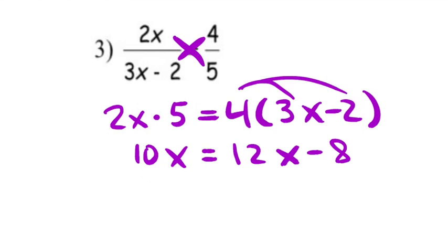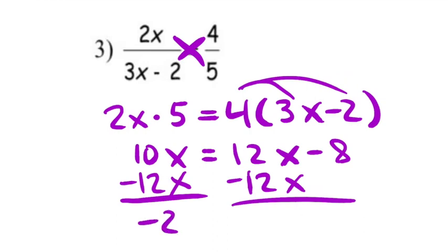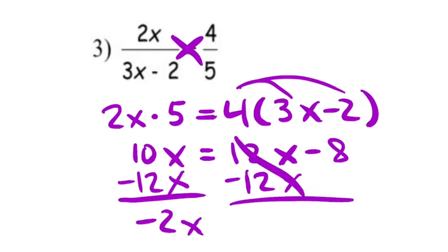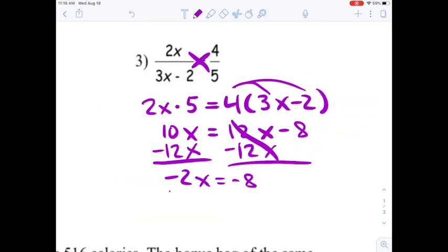Now we're in a variables on both sides situation. So I'm going to move the x term to one side. Normally I would move the smaller term, but I'm going to move the 12x this time so that I don't have to do multiple steps. This leaves me with negative 2x on the left and negative 8 on the right. And finally, I can divide by negative 2 to get my answer of x equals 4.